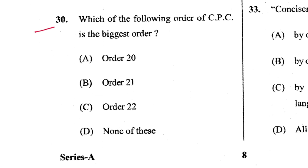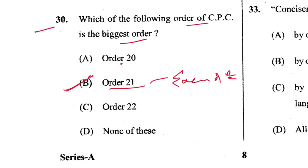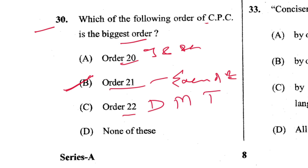Question 30: The biggest order of CPC is Order 21. B is the answer — it deals with execution of decree. Order 20 is judgment and decree, Order 22 covers death, marriage, and insolvency of parties.